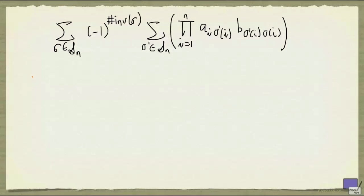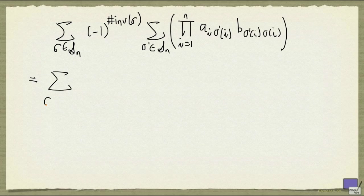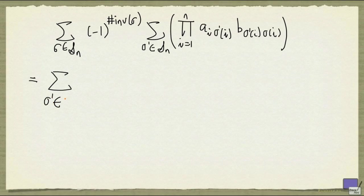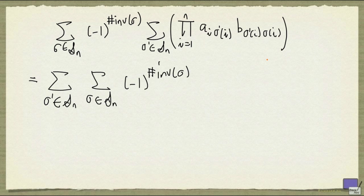So given this expression, we can rewrite things a little bit. In particular, I'm going to swap the order of the summations. So I'm going to sum over the sigma prime first, and then sum over the sigma. So this is going to go inside, and I'm going to split this product into two.